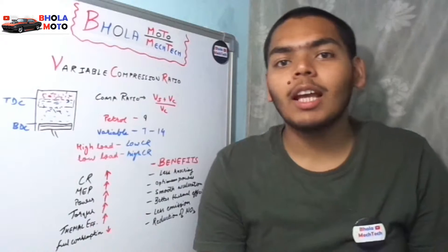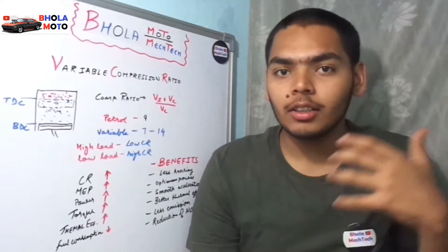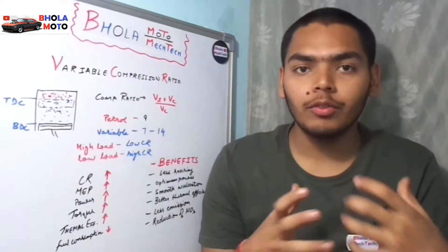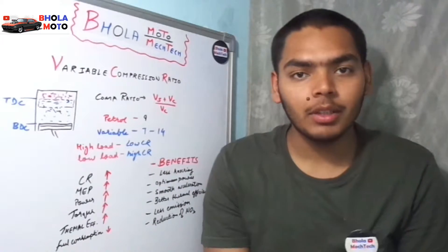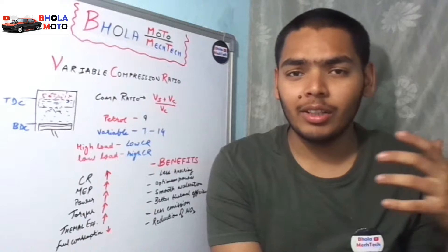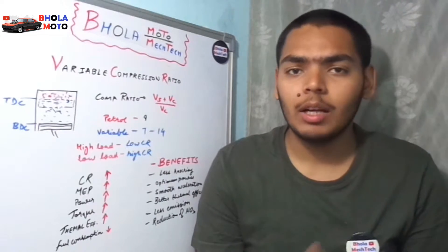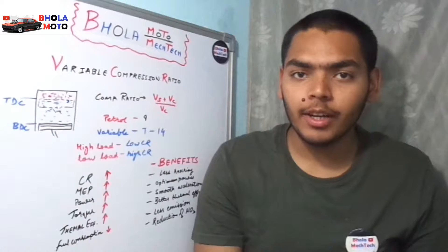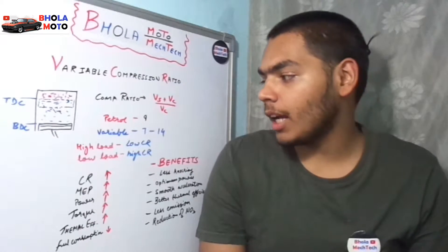In most gasoline engines — bikes and normal cars — bikes have around 9:1 compression ratio, and some cars have about 11 or 12:1. Diesel engines have a different compression ratio, which we will discuss another time. For now we are talking about petrol engines only.